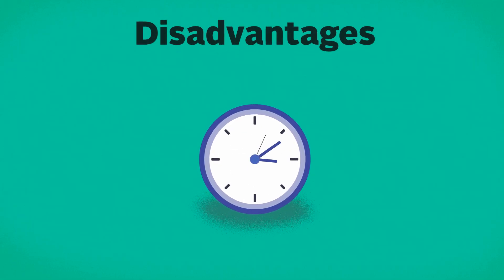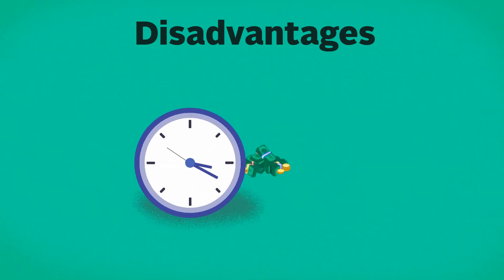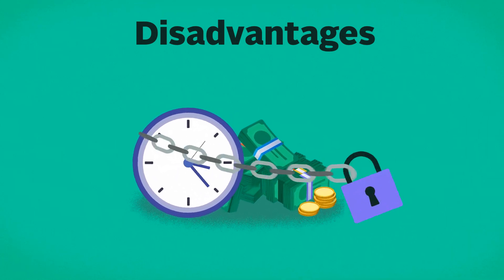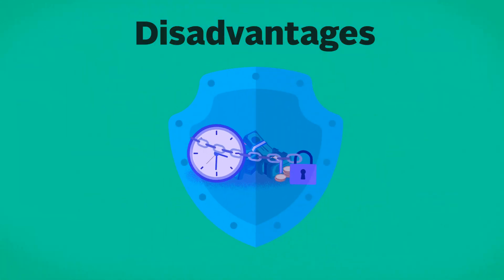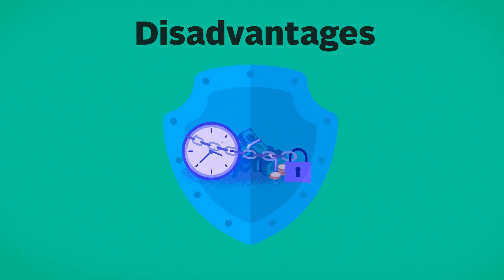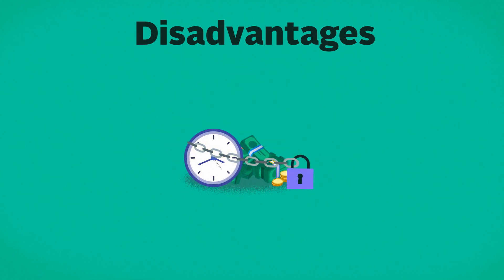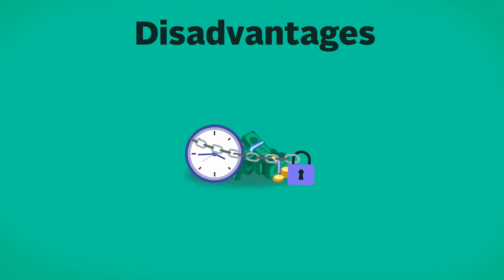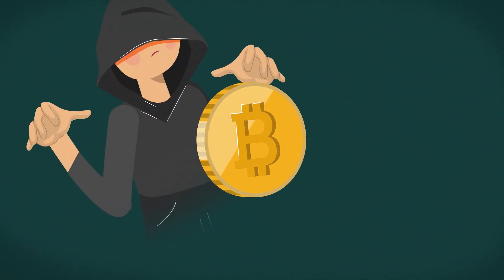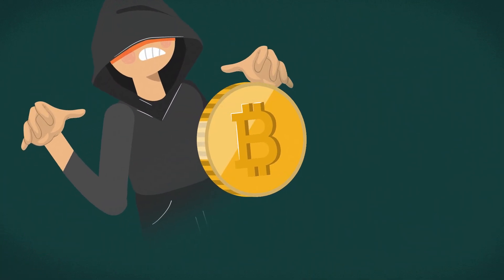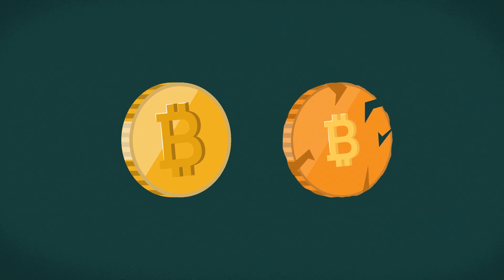Disadvantages: Even though off-chain transactions are faster, cheaper, and more private, they may not offer the same level of security, reliability, and openness that blockchain technology does. Bitcoin in particular has never been hacked or had counterfeit or double spending issues.